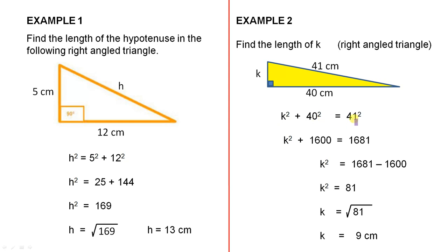So that gives us that line. Now simplifying each of those, we have that. So if we subtract 1600 from both sides, we get k² = 81. So k squared is 81, k is the square root of 81, so k is 9 centimeters.